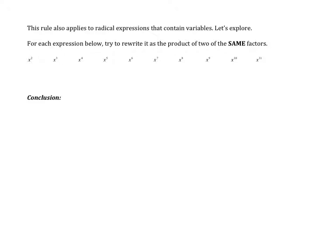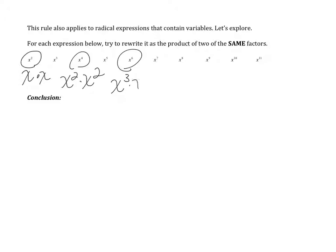Look at these variables — which ones could we break up into two of the same factors? Taking a look at x squared, we can break x squared into x times x. X to the third is a little different because I could do x squared times x, which makes three x's, so I want two of the same thing — x squared is one factor. X to the fourth works because I can break that into x squared times x squared. The next one could be x to the sixth, which would be x to the third times x to the third.